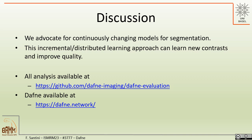In conclusion, our approach of continuously updated models trained incrementally by users everywhere in the world is a valid approach for accurate segmentation and can help in performing this task. This incremental and distributed learning approach can learn new contrasts and improve the quality of the overall model. You can find all the analysis on GitHub and download Daphne at the daphne.network website.